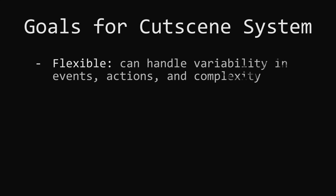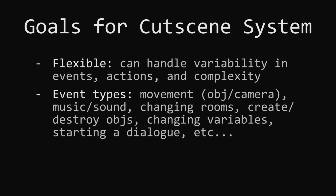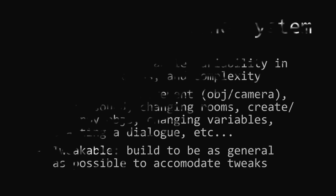Let's jump in and consider what we need our cutscene system to do. We want to make our system flexible enough to handle a wide range of scenes and events — for example, moving characters, moving the camera, playing sounds, changing rooms, creating or destroying objects, changing variables, starting dialogue, and so on. The list is really endless. And even if we don't know everything we need right now, it would be great if we could always expand on the system later without breaking everything.